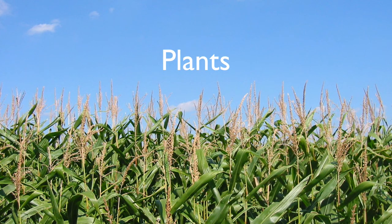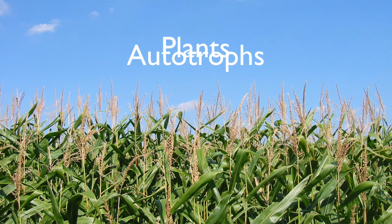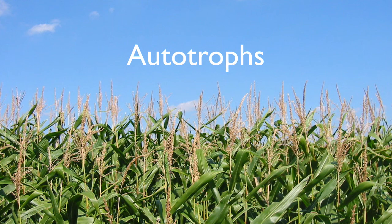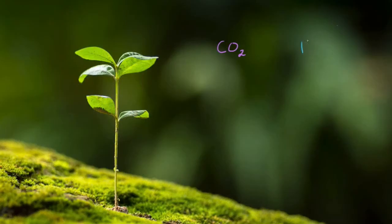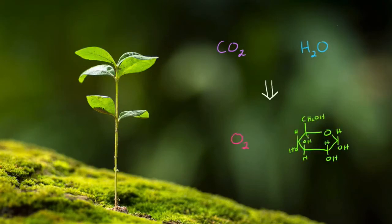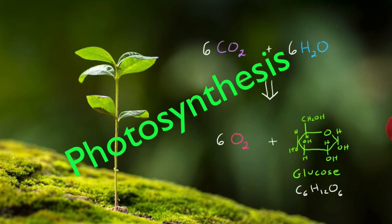What do we know about plants? Plants are autotrophs. That means they make their own organic molecules rather than getting them by eating other organisms. How do they make those organic molecules? Photosynthesis.